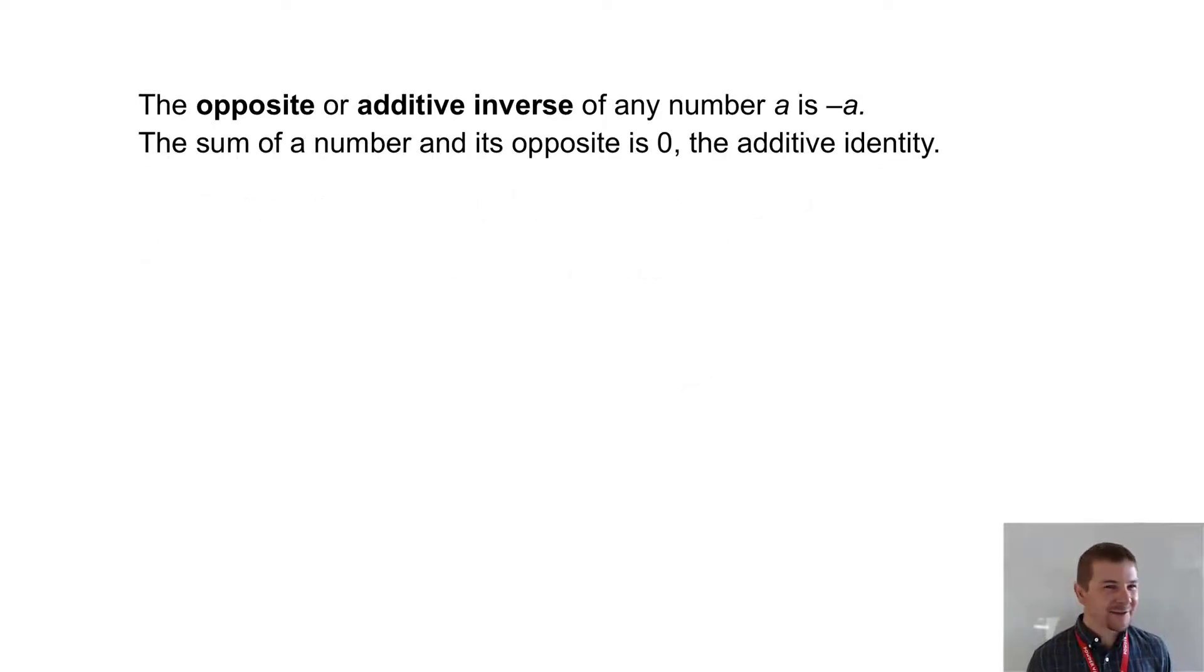The opposite, or additive inverse, of any number a is negative a. The sum of a number and its opposite is zero, the additive identity.